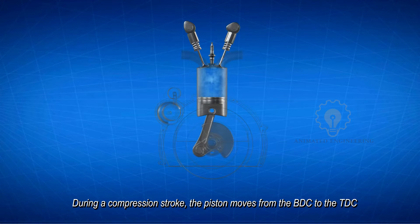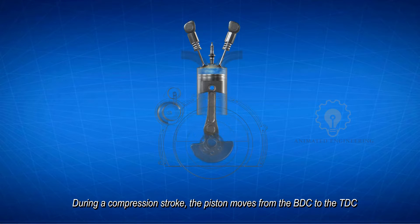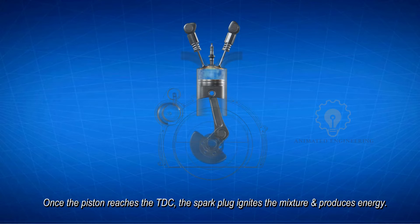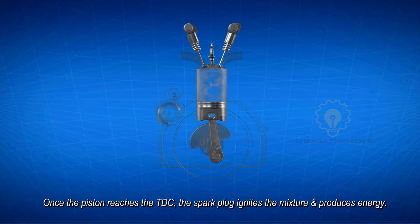During a compression stroke, the piston moves from the bottom dead center to the top dead center. This increases the pressure and temperature of the air-fuel mixture. Once the piston reaches the top dead center, the spark plug ignites the mixture and produces energy.